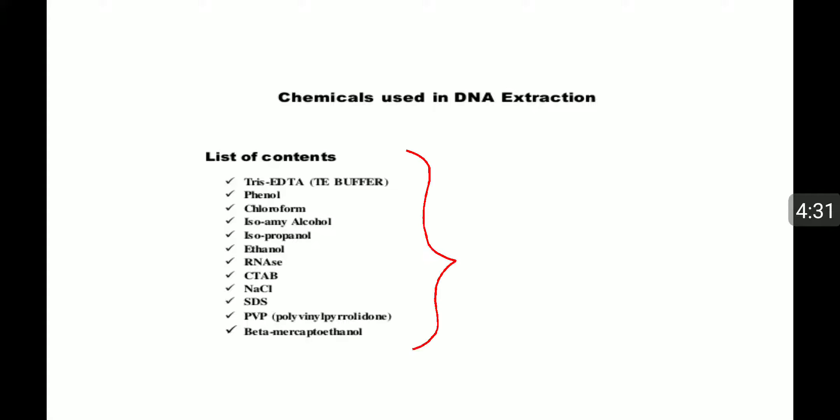These are the chemicals required for the DNA extraction procedure: EDTA, phenol, chloroform, isoamyl alcohol, isopropanol, ethanol, RNase, CTAB, NaCl, PVP, beta-mercaptoethanol. If you want to know the importance of all these chemicals, please watch my other video.